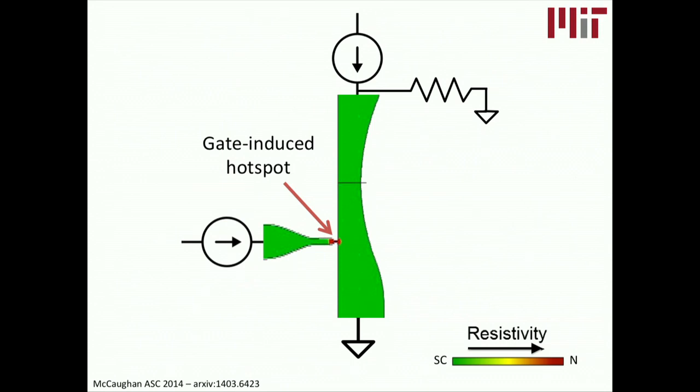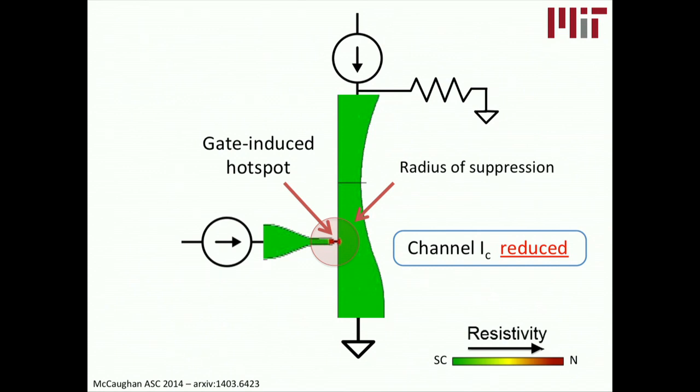But keep in mind, like I said before, there's this electrothermal suppression effect where there's actually a very large radius of suppression around that hot spot. And as a result, the amount of current that the channel can actually carry has been significantly reduced.